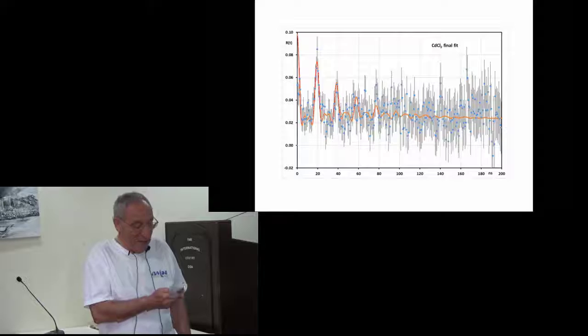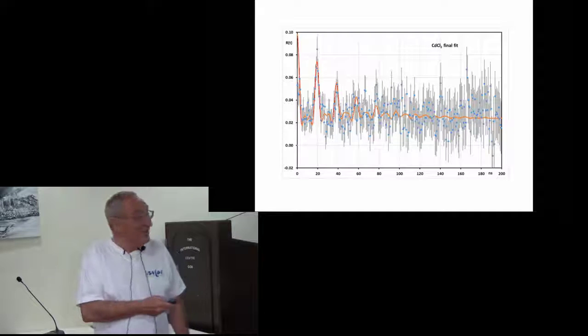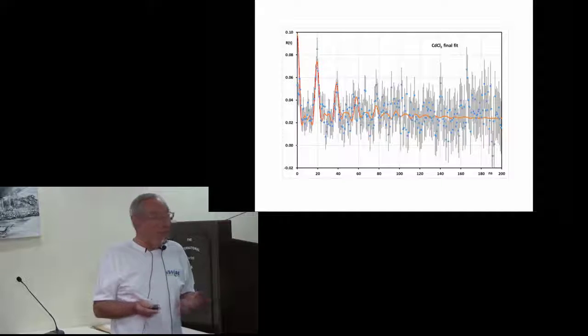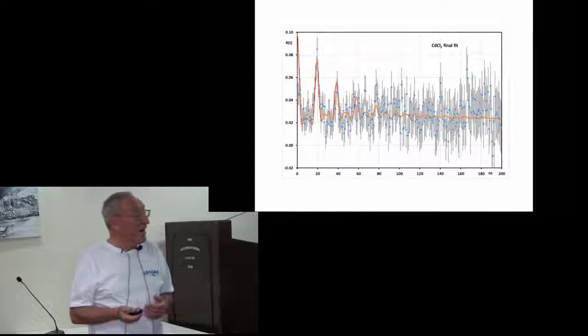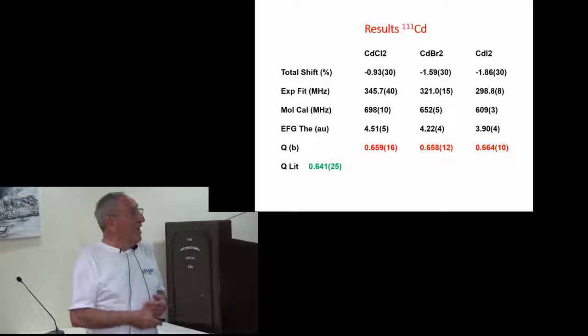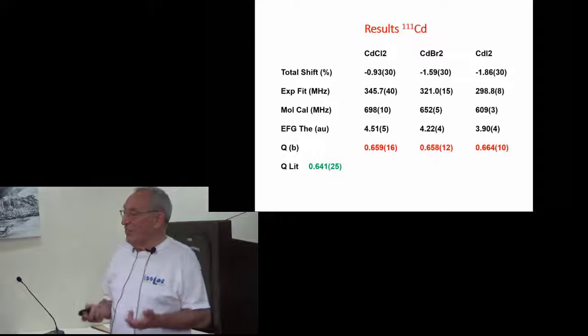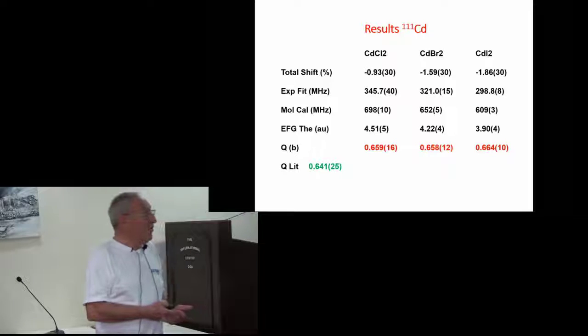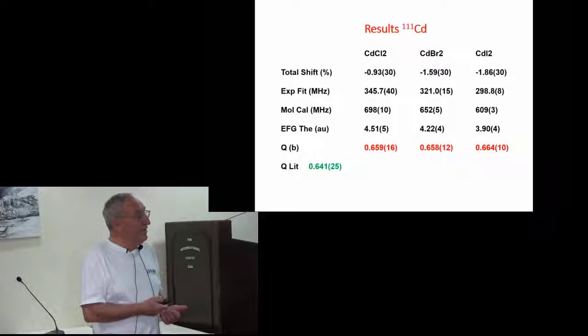It did give us the frequency. So you can clearly see, unfortunately the precision is not as high as we wanted it. But we can with high confidence get the quadrupole interaction frequency. And with that, if we have the frequency and we have the corresponding theoretical correction, we know how to correct it. We have the theoretical electric field gradient, we can get the quadrupole moments. And actually three different molecules, three different values. You notice the corresponding chloride.